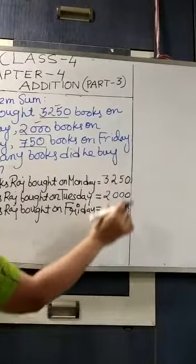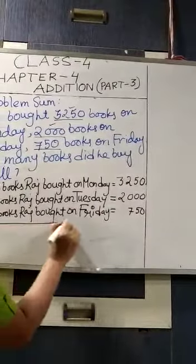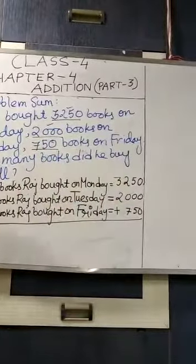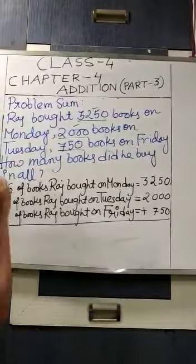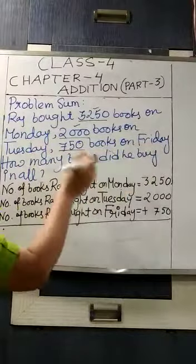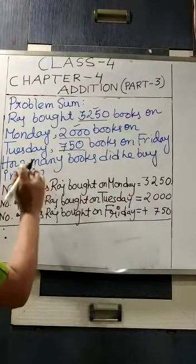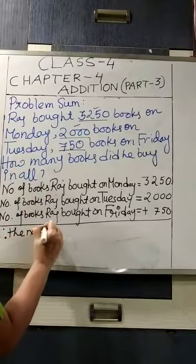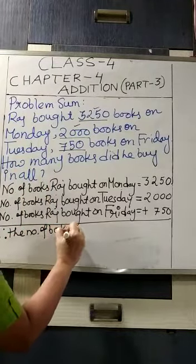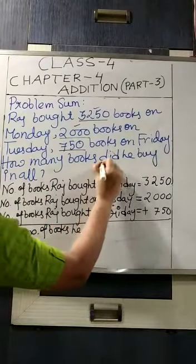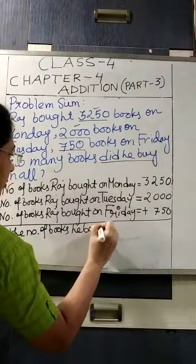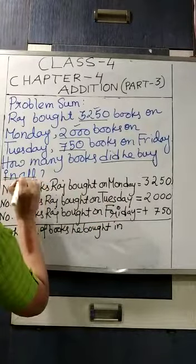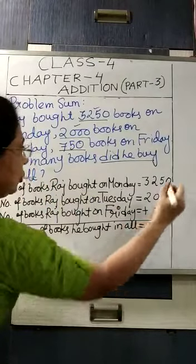Write the numbers properly according to their places. Now we will have to do the addition. In the therefore line — the question line is: how many books did he buy in all? So in the therefore line you will write: therefore, the number of books he bought in all.